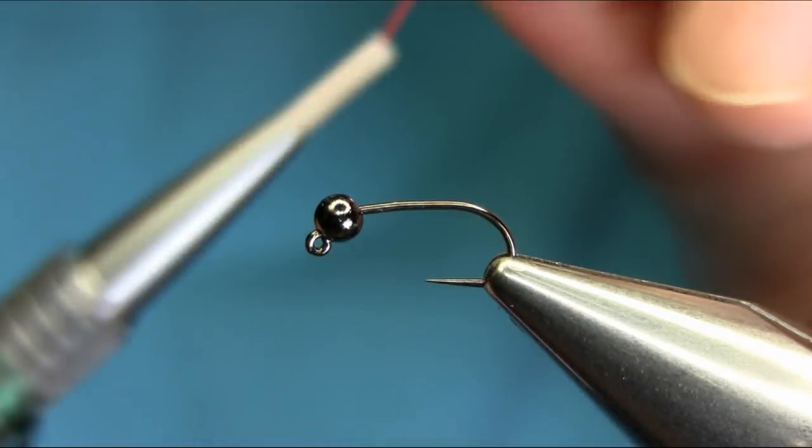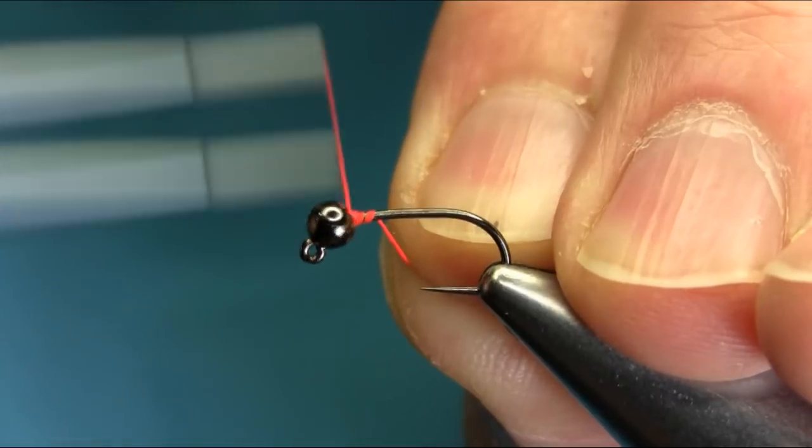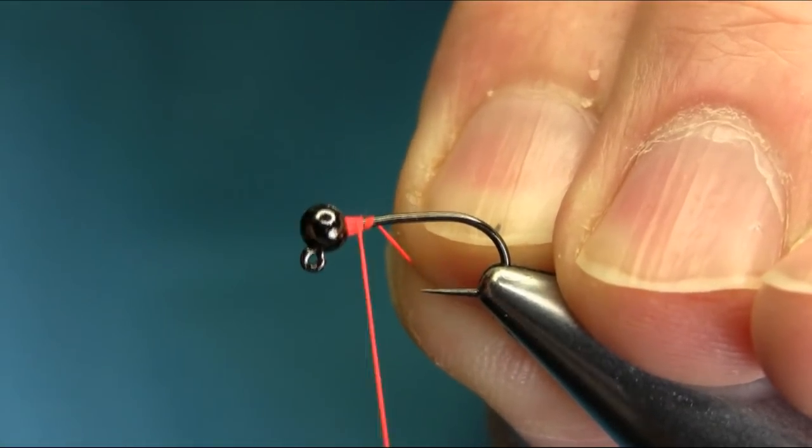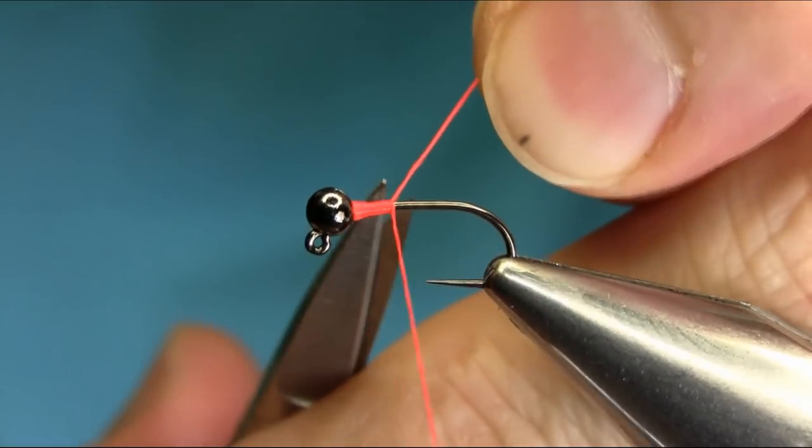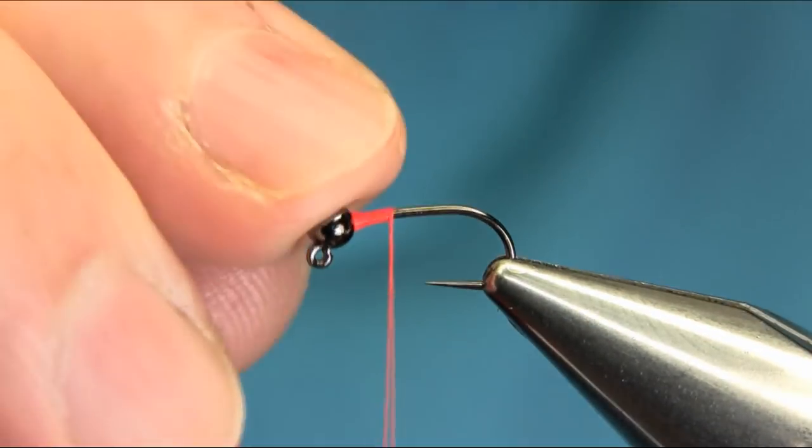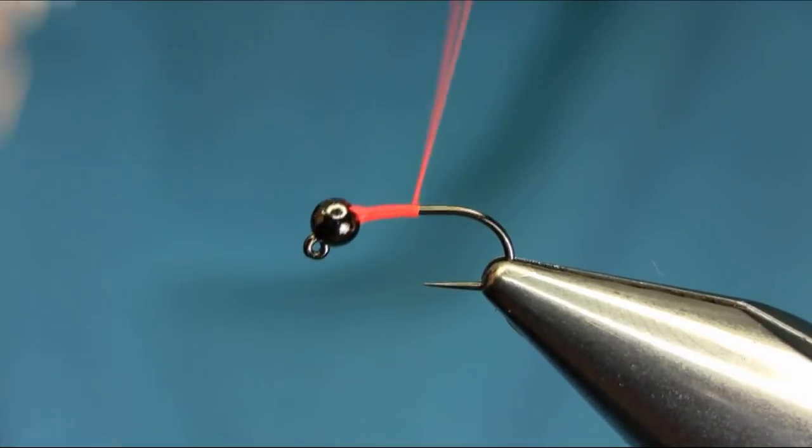A very simple pattern to tie and I'll explain all the materials as I go along. Start just below the eye to build up a little. This is a deepwater nymph, brilliant for winter fishing in the river.